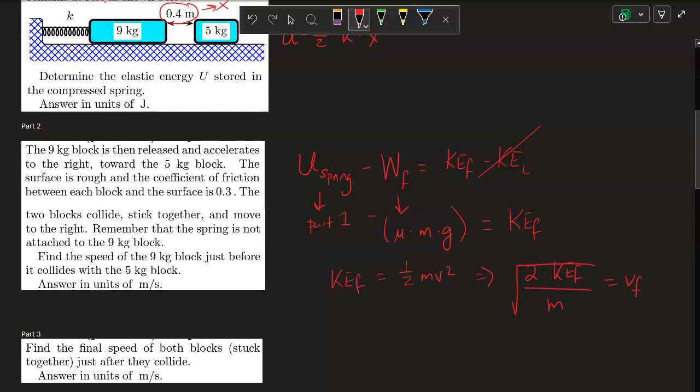Oh sorry, I made a mistake here. This work done by friction is mu times mg times d. How could I forget? You have to take the force, in this case the force of friction, times the displacement. So what is the value for this displacement? This value is provided up here. It's the same as the compression of the spring.